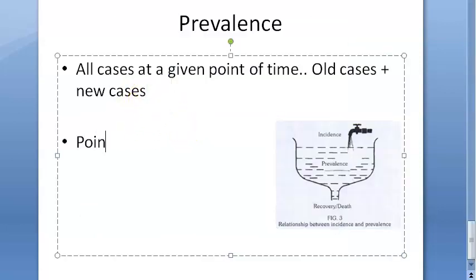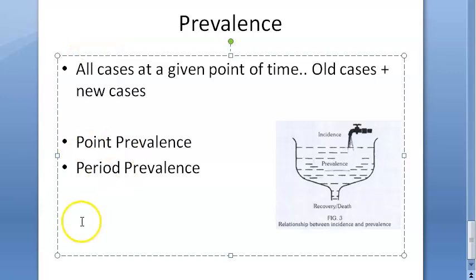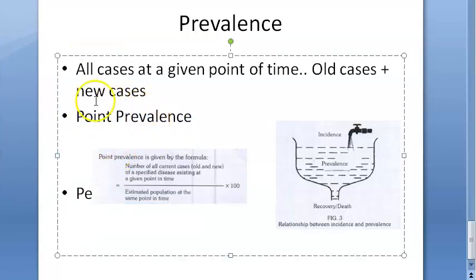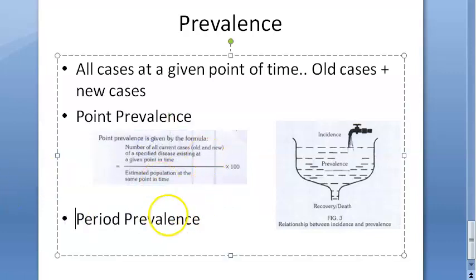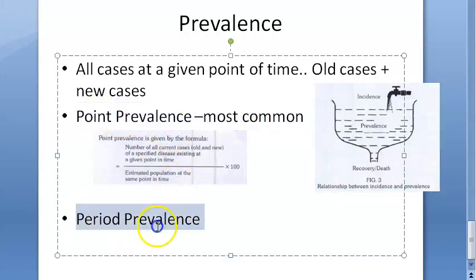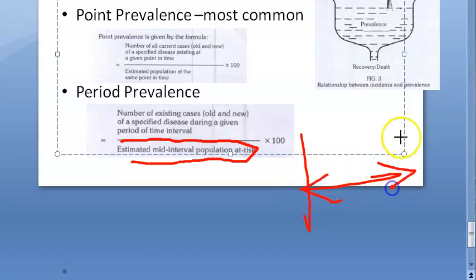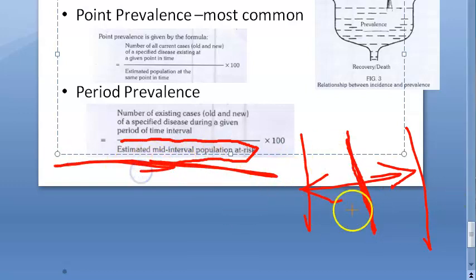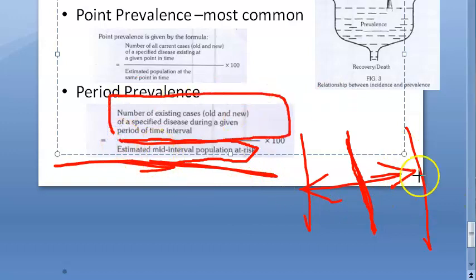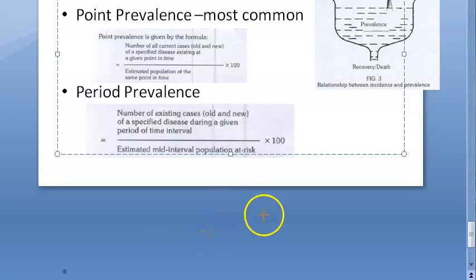There are two types of prevalence: point prevalence and period prevalence. Point prevalence is the most commonly used — when someone says 'prevalence' you can refer to point prevalence. For period prevalence, you use the mid-interval population because the population varies across the time period; you take the mid-year or mid-interval population as the denominator, with old plus new cases on top. Period prevalence is not used much — point prevalence is what's important.